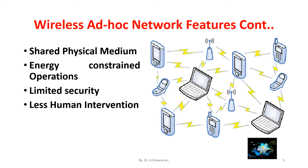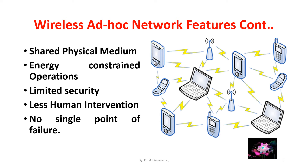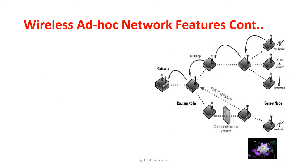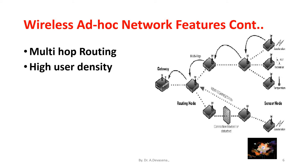The ninth feature is that less human intervention is required in ad hoc networks. They require minimum human intervention to configure the network, and therefore they are dynamically autonomous in nature. Ad hoc networks have mobile and spontaneous behavior which demands minimum human intervention. The tenth feature is no single point of failure in an ad hoc network. The eleventh feature is that multi-hop routing is required as per the situation. When a node tries to send information to other nodes which is out of its communication range, the packet should be forwarded via one or more intermediate nodes. The twelfth feature is high user density and large level of user mobility.